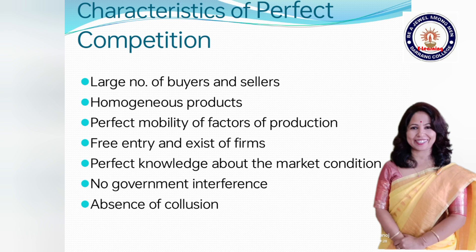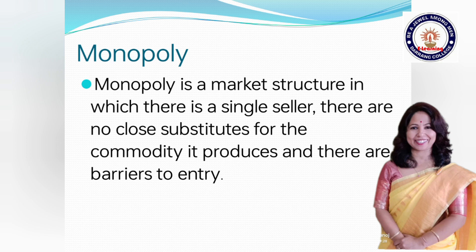There are some characteristics of perfect competition. Number 1: large number of sellers and buyers. Number 2: homogeneous product. Number 3: perfect mobility of factors of production. Number 4: free entry and free exit of firms. Number 5: perfect knowledge about the market condition. Number 6: no government interference. Number 7: absence of collusion and independent decision making by firms.